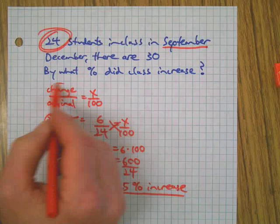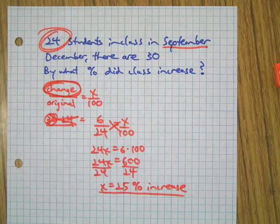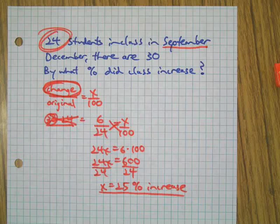That's how you do percent increase and decrease. The keyword there is the change. We're comparing how much things change, we are not comparing two things. That's a separate skill. Thanks for watching and I will see you next time.